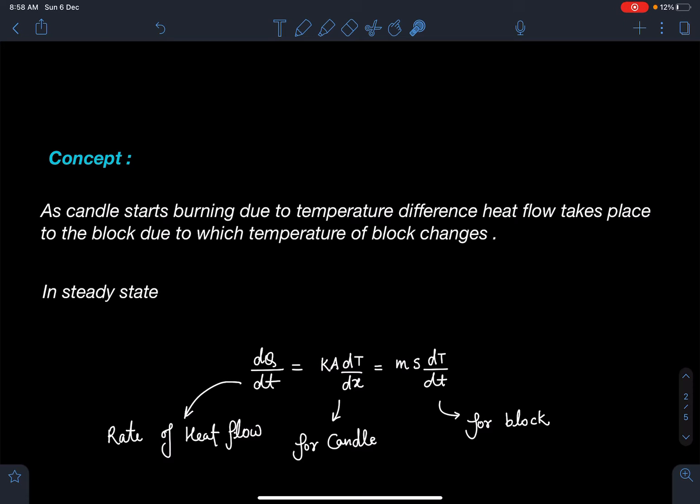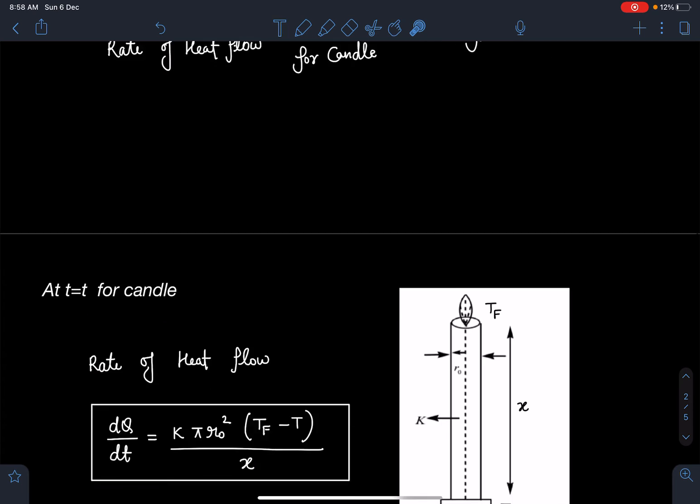In steady state, the rate of heat flow through the candle I can write as kA dT/dx, and that is going to be the rate at which heat is absorbed by this block which is going to change its temperature, so that is Ms dT/dt. This dQ/dt is the heat current or rate of heat flow.